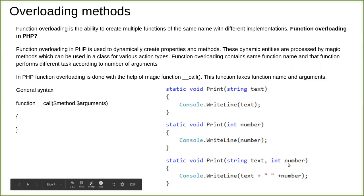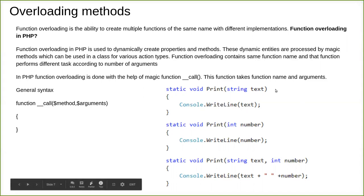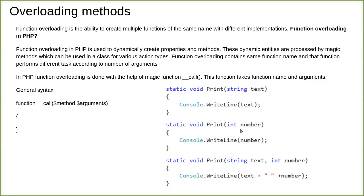The compiler checks when a particular function is called — whether this version or that version should be called. We differentiate based on the parameters. If you call the 'print' function with a string as the first argument and an integer as the second, it correctly matches that specific version. If you call print with only a single integer, it executes only that version. Even for a single parameter, it checks the data type — whether it is an integer or a string — and executes the matching version. This is called overloading: the same function name written again and again with different implementations.